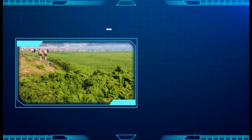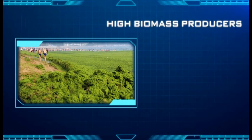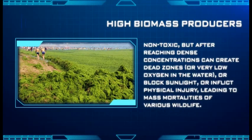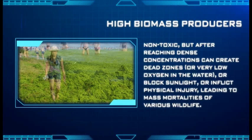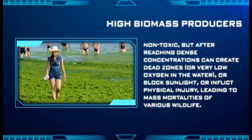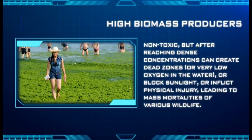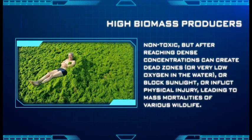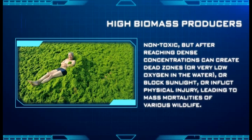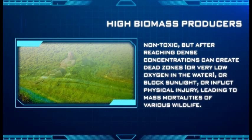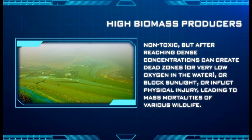The second group are high biomass producers, which are non-toxic. After reaching dense concentrations, they can create dead zones, which can block the sunlight, inflict physical injury, or lower the level of oxygen in the water, leading to mass mortalities of various wildlife. And some HABs have characteristics of both groups.